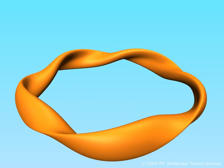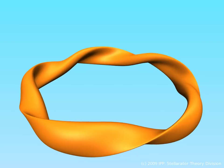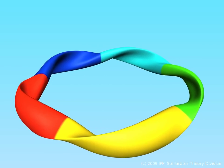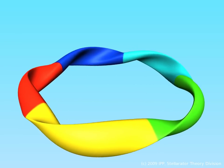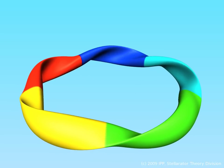The result of this optimization is Wendelstein 7X, which possesses a five-fold symmetry indicated by different colors for each of the identical sections.